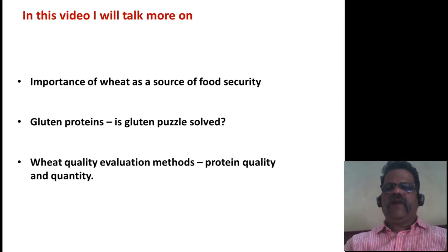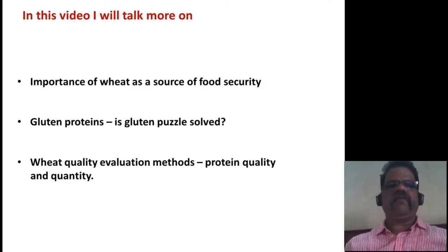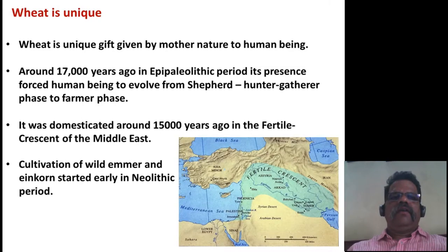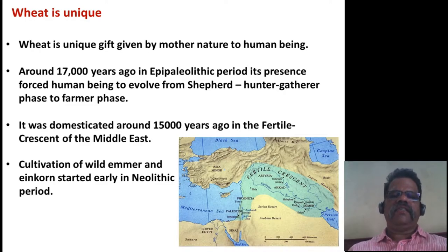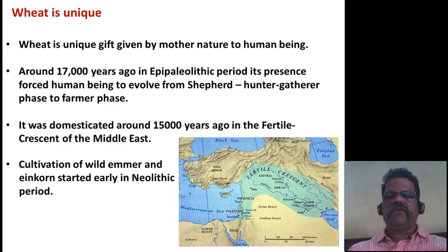Topics include wheat quality evaluation methods, why we read protein, and protein quality and quantity for wheat quality determination. As we know, wheat is a unique gift given by mother nature to human beings, because around 17,000 years ago in the epipaleolithic period it forced human beings to evolve from the shepherd hunter-gatherer phase to the farmer phase, and agriculture began.